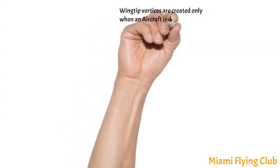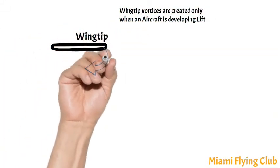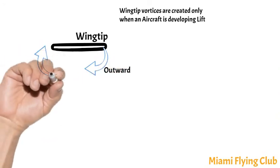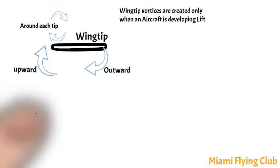Wing tip vortices are created only when an aircraft is developing lift. The vortex circulation is outward, upward, and around each tip. Vortices sink at a rate of about 400 to 500 feet per minute.